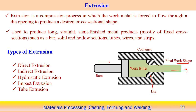The size and shape of the component depends upon the die opening. This is basically known as the hot extrusion process, where we apply a compressive load on one side using a RAM. This type of process is used to form long, straight, semi-finished metal products, mostly of fixed cross-section — such as bars, solid or hollow sections, tubes, wires, and strips.